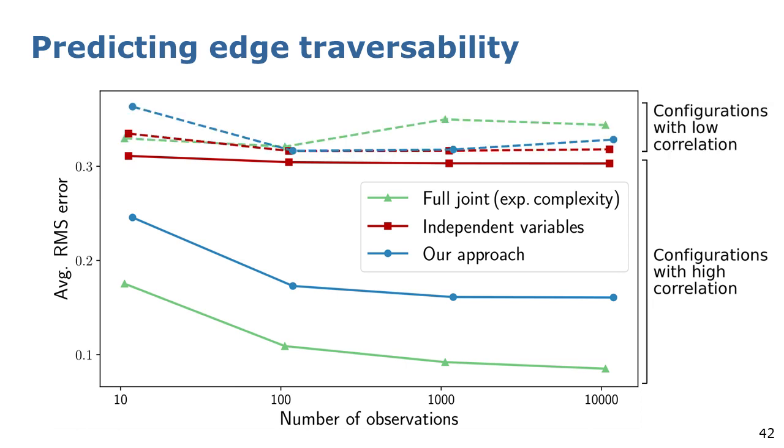In case the changes have low correlation, all the approaches provide similar performance. Thus, our approach behaves similarly to considering the full joint distribution and does not lead to worse performance than assuming independence among edges.